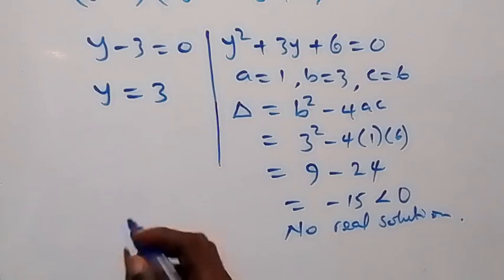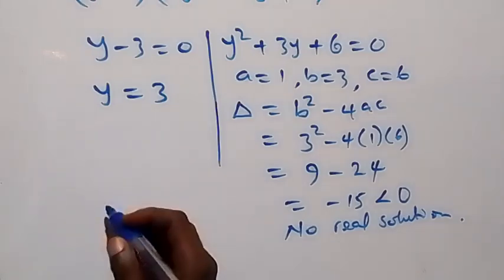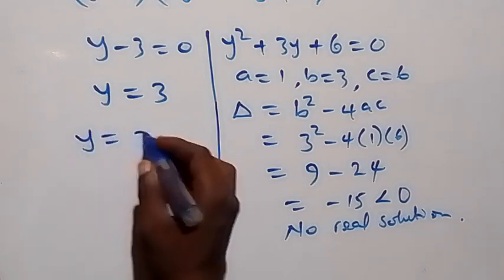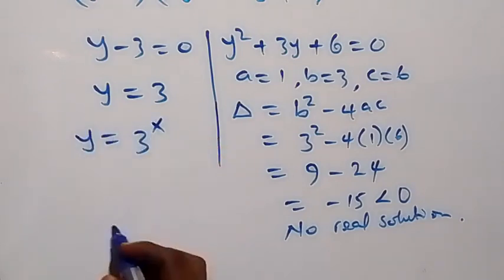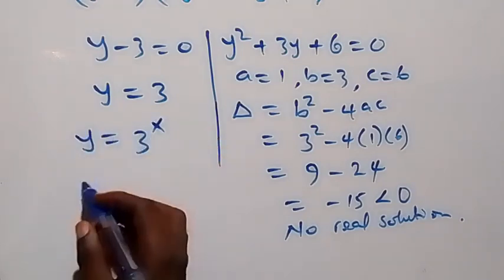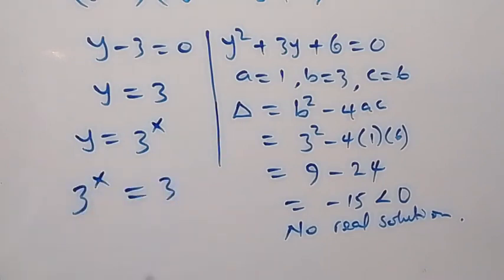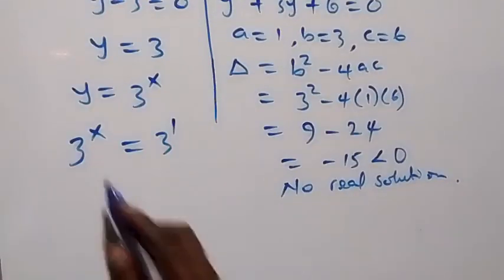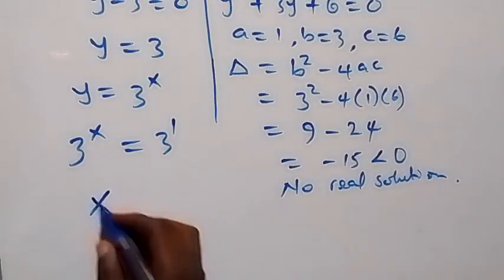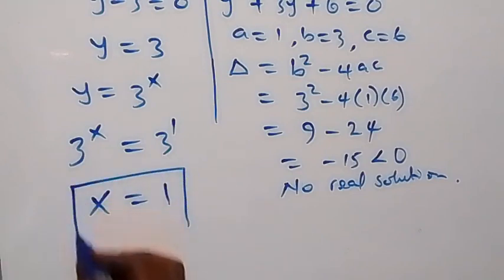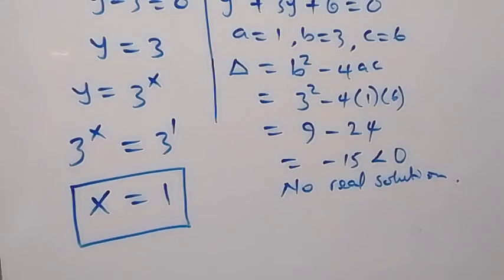Then for this side, we have y equals 3. Recalling that we let y equal 3 raised to power x, it implies that 3 raised to power x equals 3, which is also 3 raised to power 1. These are equal, so we can say that x equals 1. We have the solution to this problem: x equals 1.